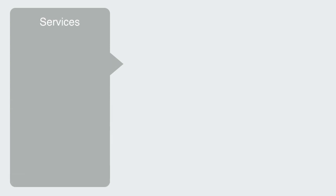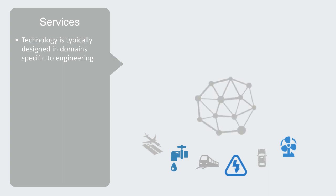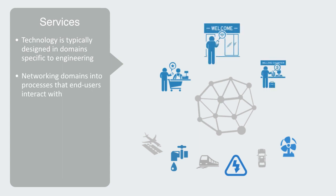Technology is typically designed in domains specific to engineering. A building may be composed of a hydraulic system, electrical system, heating, and so on. It is also the same on the macro scale, with different companies operating airports, subways, and motorways. The services revolution is about networking these technologies and domains into a process that end users interact with through digital interfaces, and this is increasingly the structure of our complex engineered systems.